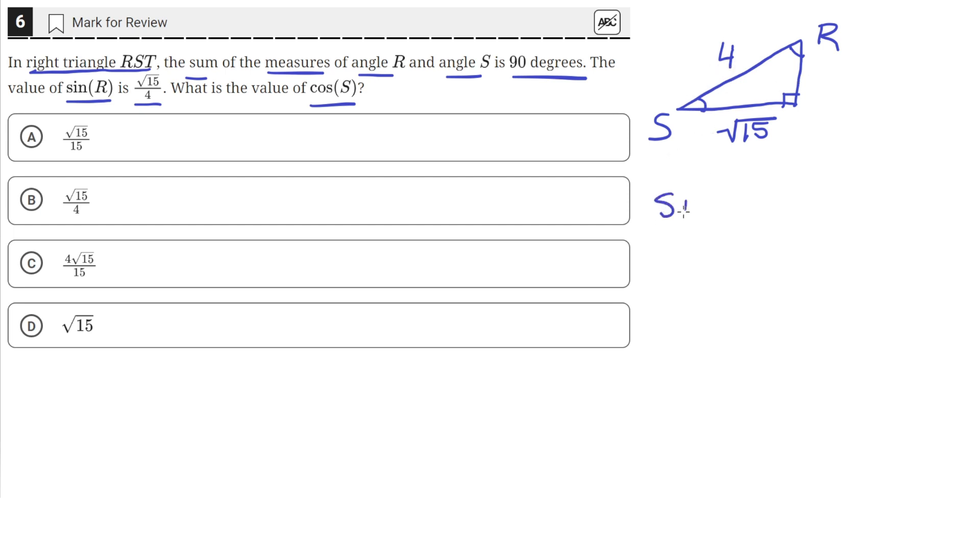So the sine of R was equal to square root 15 over 4, and the cosine of S is also equal to square root 15 over 4.